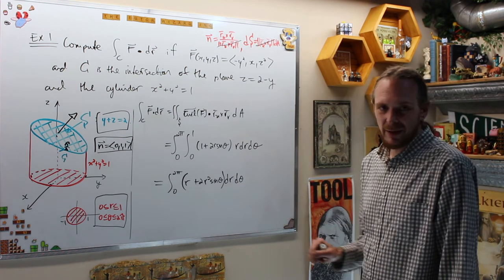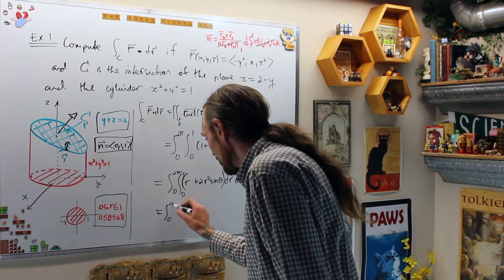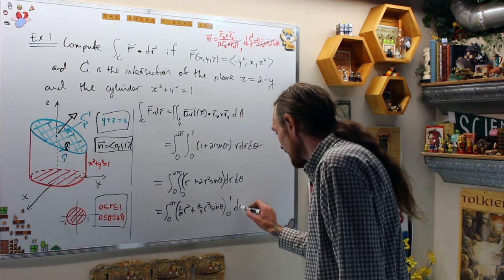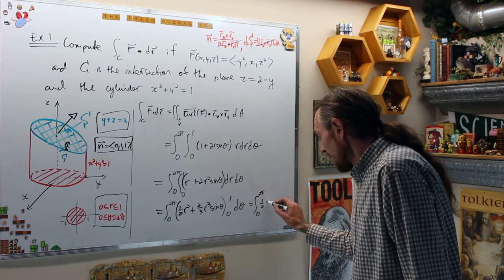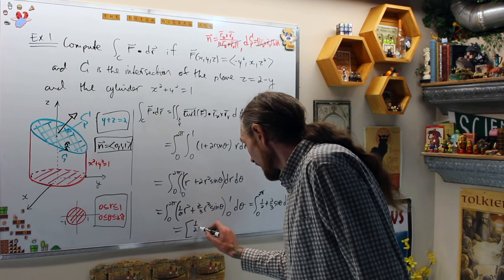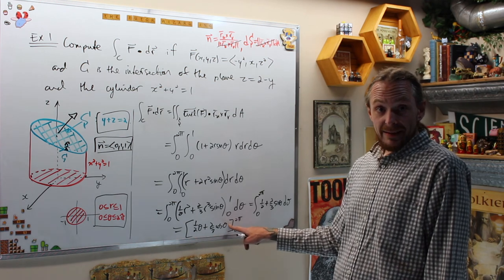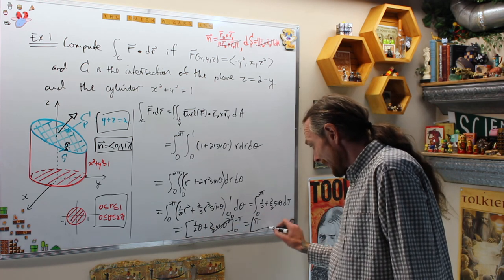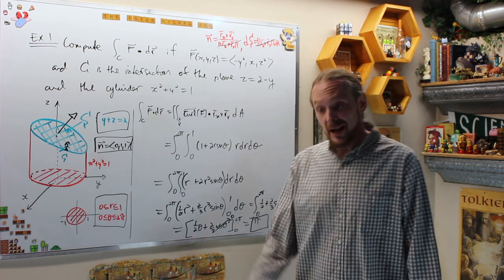Integrating with respect to r first: ∫₀¹ (r + 2r² sin θ) dr = [½r² + (2/3)r³ sin θ]₀¹ = ½ + (2/3) sin θ. Then integrating over θ from 0 to 2π: ∫₀²π (½ + (2/3) sin θ) dθ = [½θ - (2/3) cos θ]₀²π. At 2π: ½(2π) - (2/3)(1) = π - 2/3. At 0: 0 - (2/3)(1) = -2/3. So the result is (π - 2/3) - (-2/3) = π. The answer is π. Please subscribe and hit the notification bell — we have one more video on Divergence Theorem coming up.